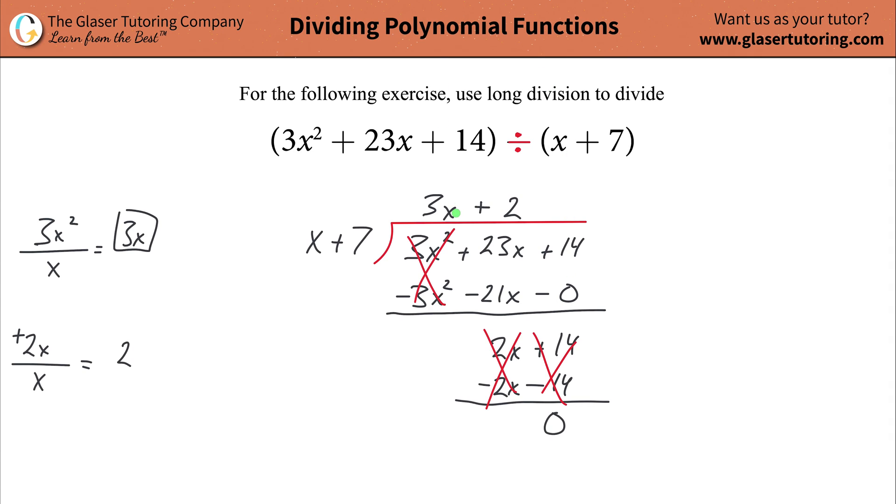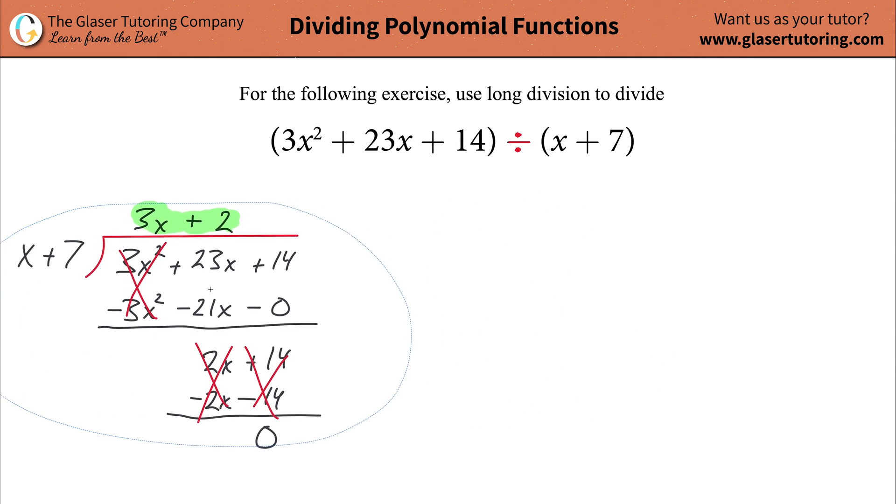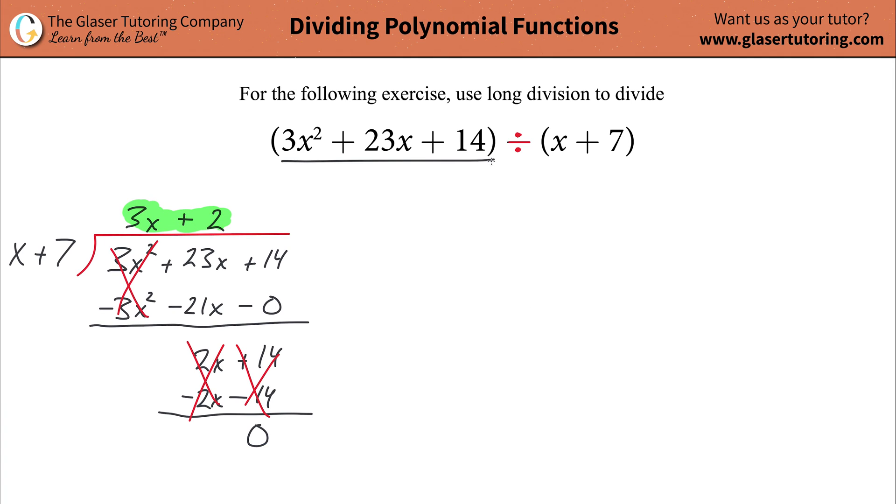What that now means is that this quotient up here is the answer to the division. Now, if you'd like to check yourself, I suggest you do the following. I'm going to rewrite this equation out, taking this polynomial function and dividing it by that. It would look like this in fractional form: 3x squared plus 23x plus 14 all divided by x plus 7, and when you do this division, you realize it works out to be that quotient of 3x plus 2.